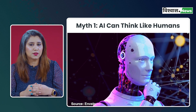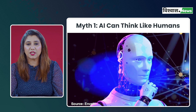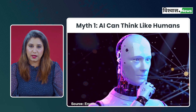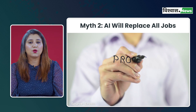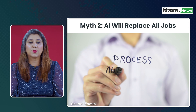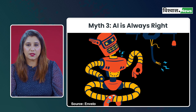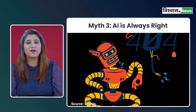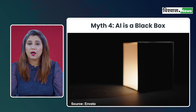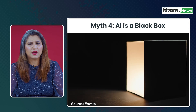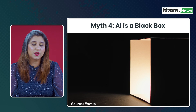Myth one: AI can think like humans. AI processes data based on algorithms and patterns. It lacks consciousness and subjective experience, which are fundamental aspects of human thinking and reasoning. Myth two: AI will replace all jobs. While AI can automate repetitive tasks, it also creates new opportunities. It is a tool to enhance productivity and creativity, not necessarily a job terminator. Myth three: AI is always right. AI is not infallible — it can make errors, especially when it encounters situations it hasn't been trained for. Human oversight and intervention is essential.